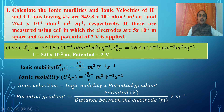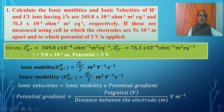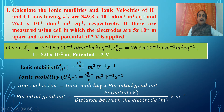Ionic velocity can be calculated by ionic mobility multiplied by potential gradient. Potential gradient is obtained by dividing the potential applied across the electrodes by the distance between the electrodes, giving units of volt per meter. Using ionic mobility and potential gradient, you can calculate the ionic velocity.